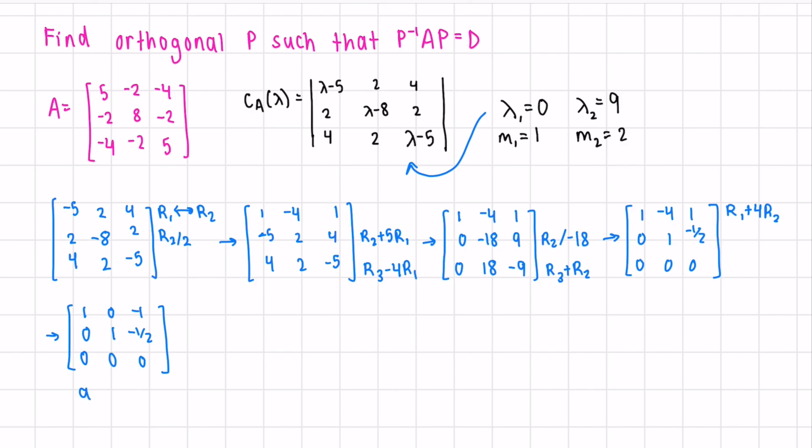Next, we can say that our third variable, let's say c is a parameter. This means a minus c equals zero and b minus one half c equals zero. The solution to this homogeneous system is x is c times, let's isolate for a, we get one. For b, we get one half and c is the parameter, so that's one. We can now say that the corresponding eigenspace of this vector zero is the span of, we could either say this vector or to eliminate fractions, we could say two, one, two.